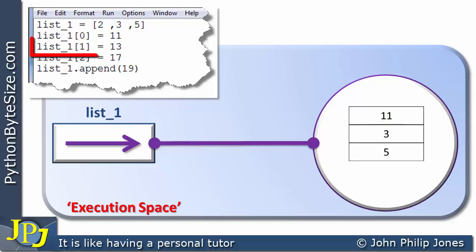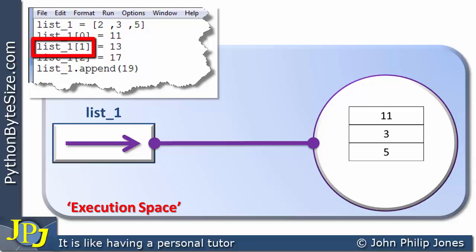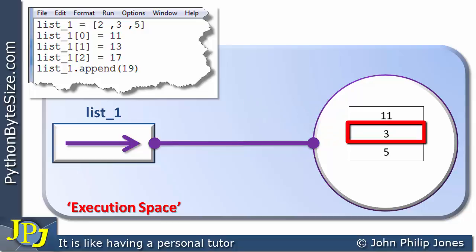If we now consider this program statement, we can see that we're going to be assigning 13 to this particular element in the list. This element currently contains three, so after the program statement executes, the three will actually become 13, as you can see here.